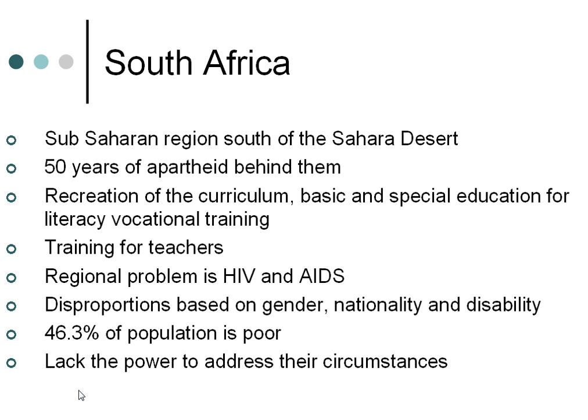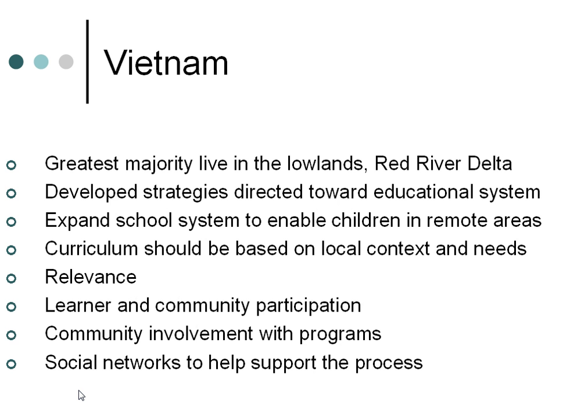The lack of literacy also created other challenges that were related to disproportions based on gender, location, nationality, and disability. Vietnam — the greatest majority of the population lives in the lowlands where population density is high. An example is the Red River Delta, where there are about over 7,250 individuals per square kilometer.